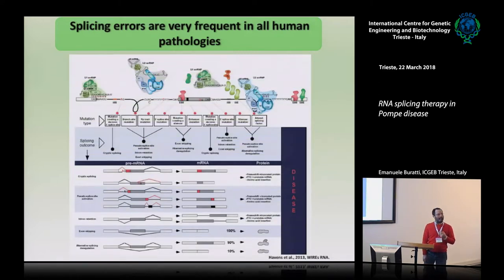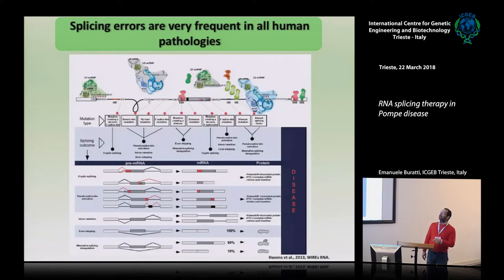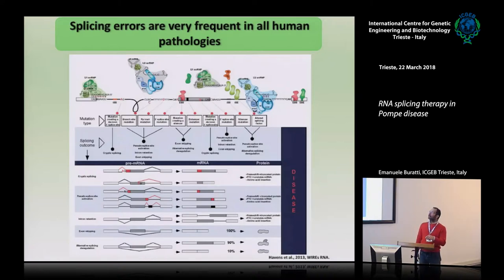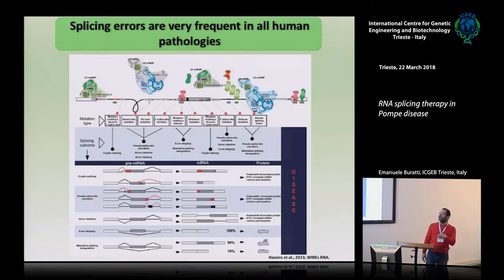What happens when you have splicing mutations? This is very important if you want to think of ways of correcting them. You can see all the elements that determine whether an exon is included or not: the splice sites, the splicing silencers and enhancers. If you have mutations in any of these elements, a certain number of events can occur. The most likely event is exon skipping — the exon is not recognized anymore. If you are lucky, the upstream and downstream exons are still in frame, so you don't create a premature stop codon, and you produce a protein missing some information but not degraded by NMD.